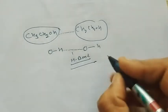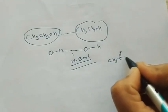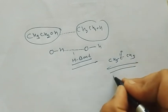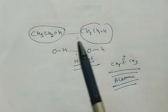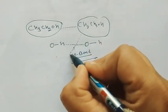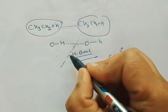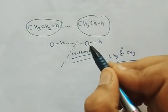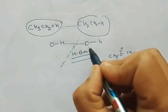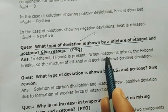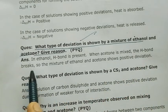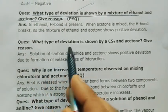Acetone is propanone: CH3-CO-CH3. When acetone is mixed with ethanol, it breaks the H-bond of ethanol. Once the H-bond is broken, only a weak force remains between alcohol molecules, so vapors form more easily. That is why the mixture of ethanol and acetone shows positive deviation — the H-bond breaks and weak force remains.